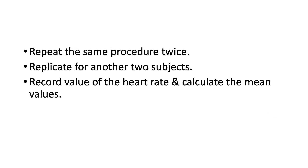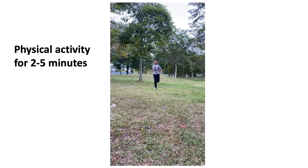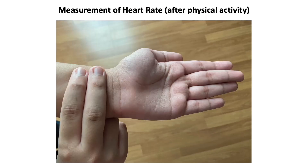You also need to get the heart rate after exercise. Students A, B, and C must engage in a physical activity for 2 to 5 minutes. For example, if you choose to run for 5 minutes, all participants need to run for 5 minutes. Immediately after, measure the heart rate, record the data, and compare the results of heart rate before and after exercise for all three students.